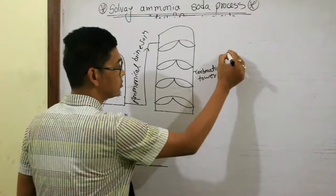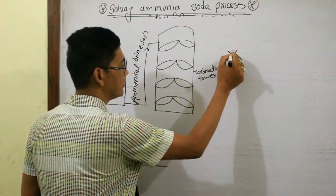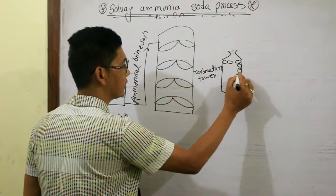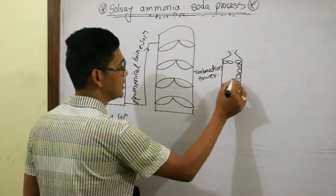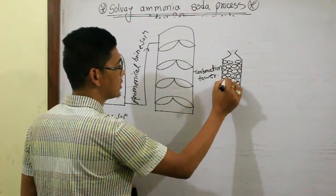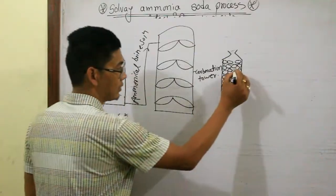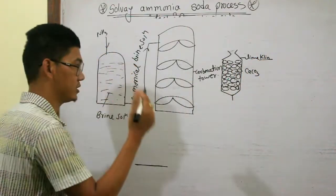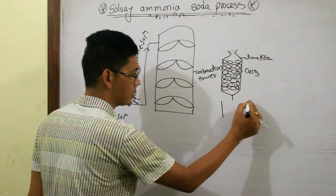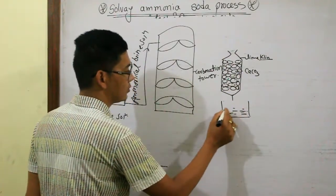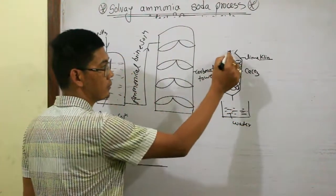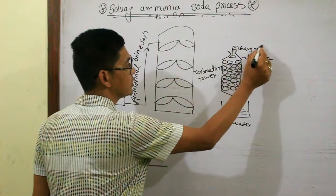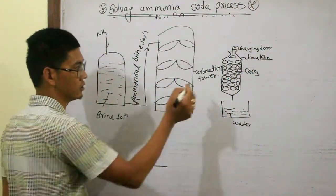From here we go to another tower. Here we have calcium carbonate (limestone). Limestone is heated and we get calcium carbonate decomposing. The products are CO2 gas from the calcium carbonate decomposition in this tower.